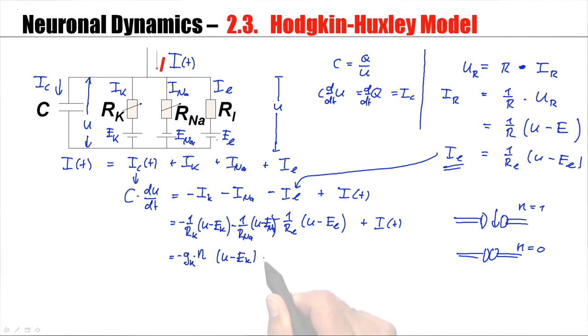The same kind of reasoning can be applied to the sodium current. It has a maximum conductance. It depends on the voltage. And again, there is a gating variable. In fact, there is a first one called M and a second one called H. And then I have to copy the rest. 1 over RL is GL. It's the conductance of the leak channel. U minus EL plus I, the applied current.